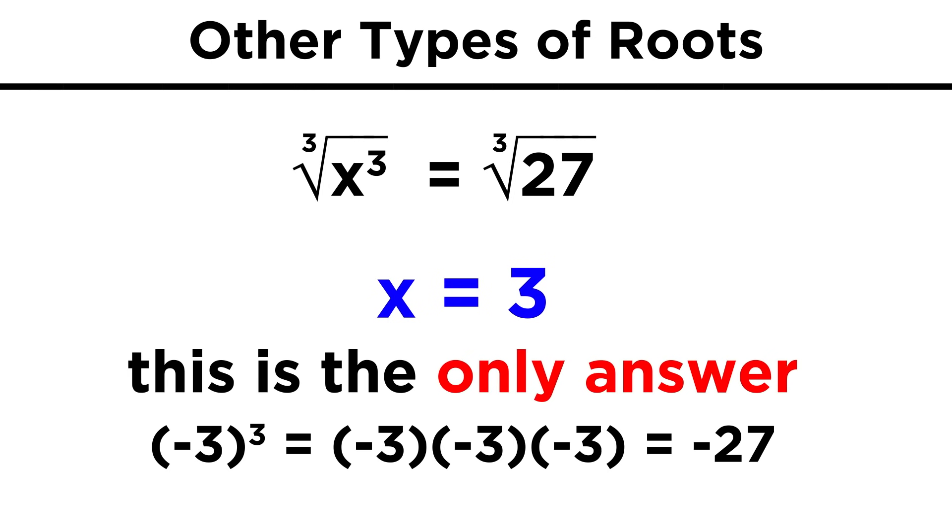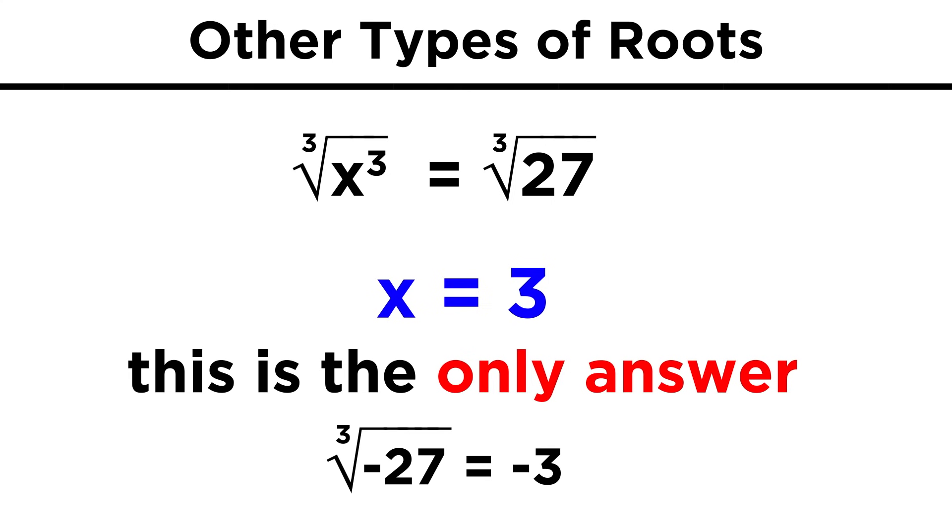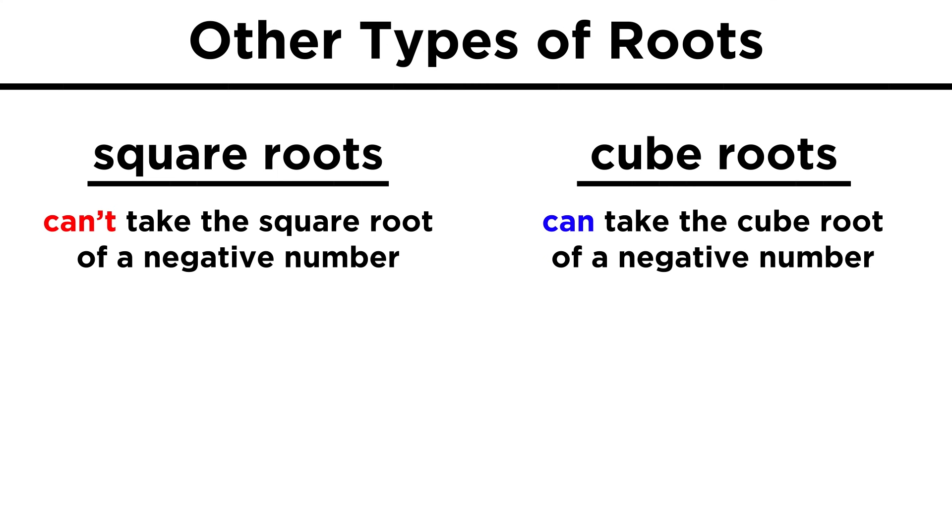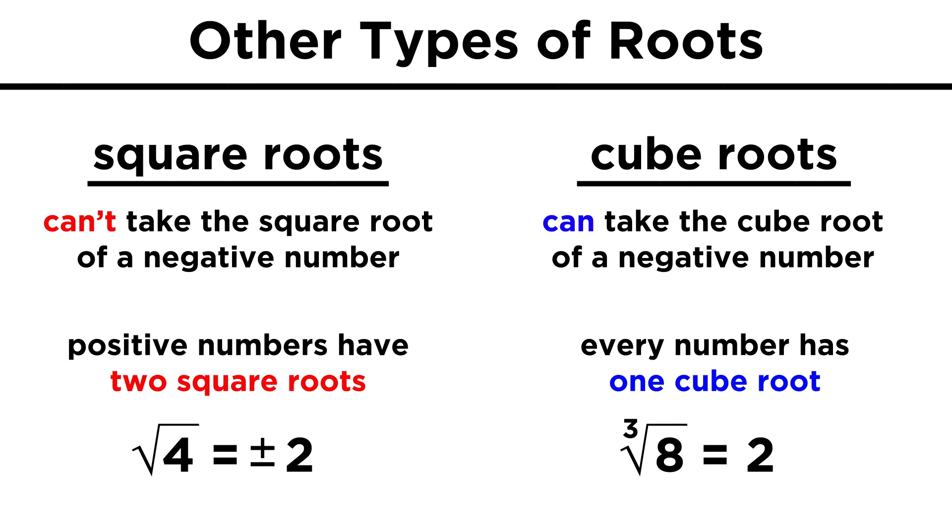Also notice that in this case, this is the only answer. Negative three doesn't work, because negative three times negative three times negative three equals negative twenty-seven. So negative three is the cube root of negative twenty-seven. In this way, cube roots differ from square roots, first because you can take the cube root of a negative number, and second because any number will only have one unique cube root, rather than two.